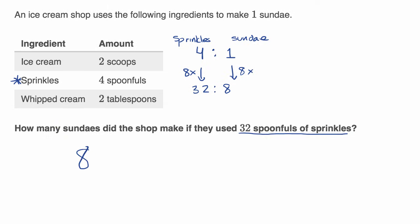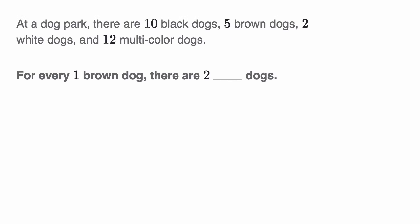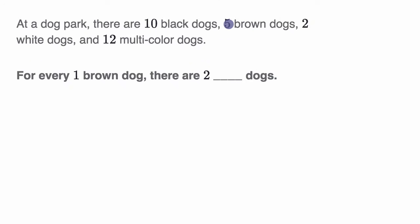Let's do one last example. At a dog park, there are 10 black dogs, five brown dogs, two white dogs, and 12 multicolor dogs. For every one brown dog, there are two blank dogs. Pause the video and figure out what goes in this blank. There are five brown dogs for every 10 black dogs, five brown dogs for every two white dogs, and five brown dogs for every 12 multicolor dogs.